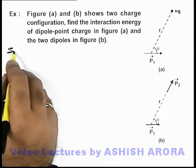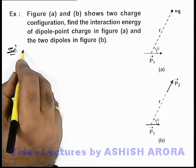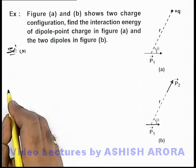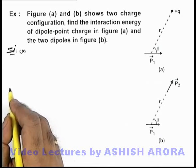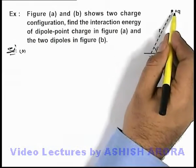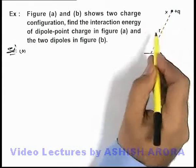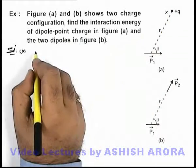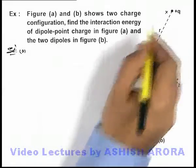Here we just talk about the situation given in figure (a). We are required to find the interaction energy of the dipole and point charge. If the charge is placed at a location x, then at point x we can easily find out the potential due to this dipole.